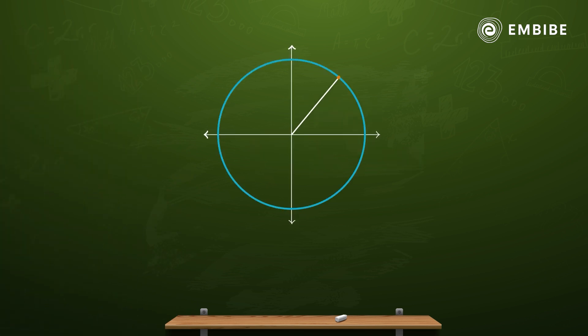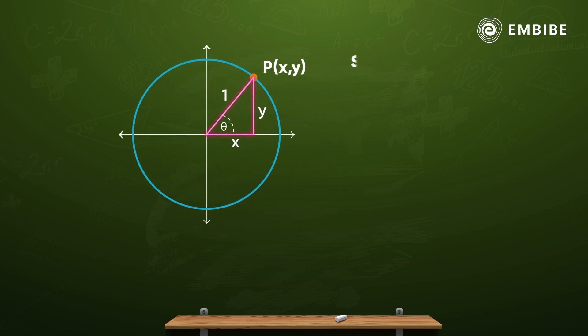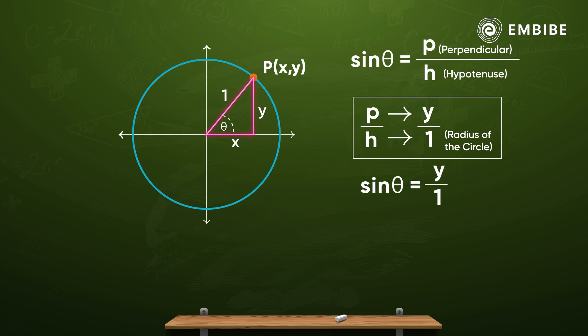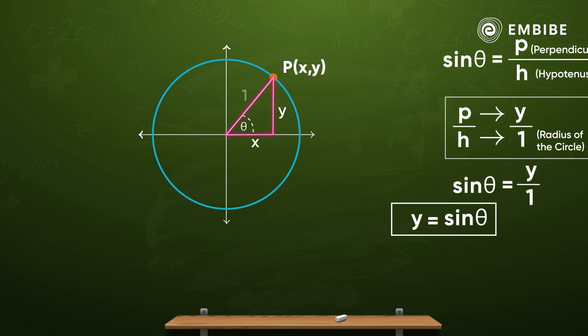If I form a triangle of the point P, then the angle theta will be sine theta equals perpendicular by hypotenuse, which would be y by radius of this circle. Since radius is 1, then sine theta will be equal to y coordinate.